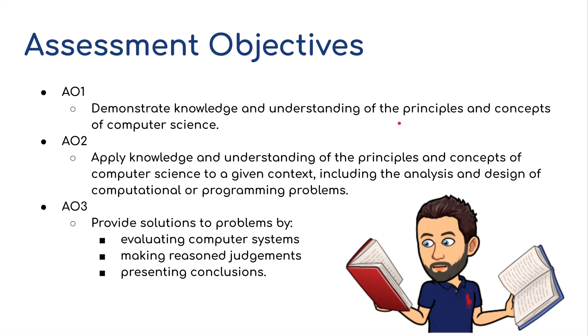AO1: demonstrate knowledge and understanding of the principles and concepts of computer science and theory. AO2: Apply knowledge and understanding to a given context, including the analysis and design of computational or programming problems. AO3: provides solutions to problems by evaluating computer systems, making reason judgments, presenting conclusions.